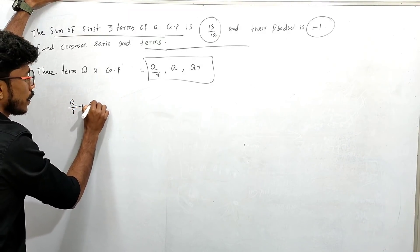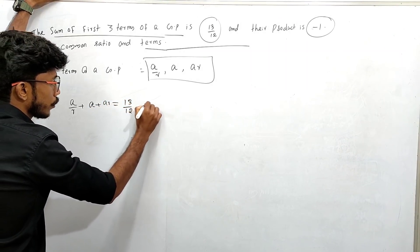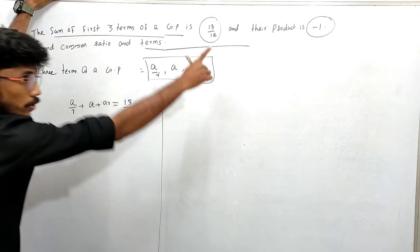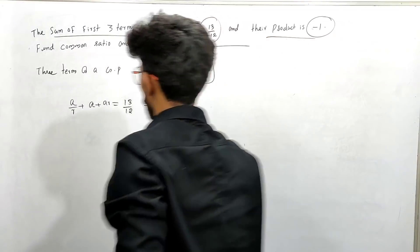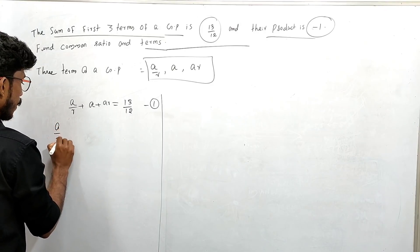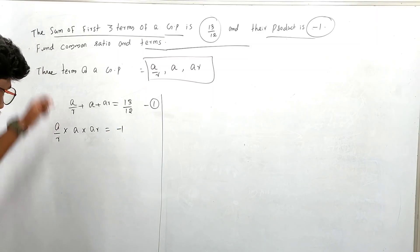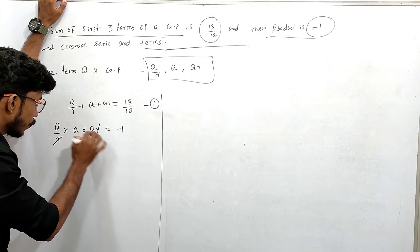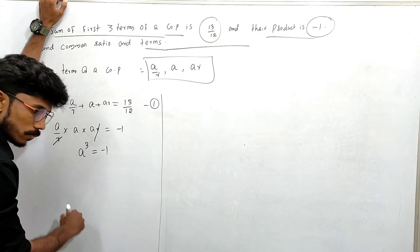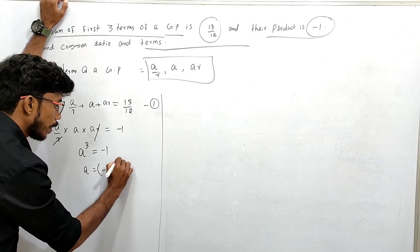So A/R plus A plus AR equals 13 by 12. Also, the product: A/R times A times AR equals A³ equals minus 1. This r cancels out. A into A into A gives us A cube. So A cube equals minus 1, and A equals the cube root of minus 1, which is minus 1.